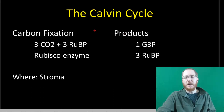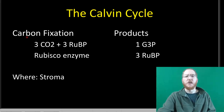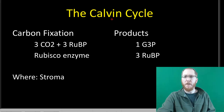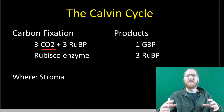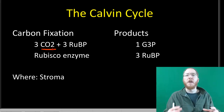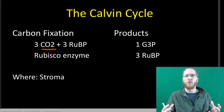So starting off, what do we need and what are we going to get? For us to do carbon fixation, which is really what the Calvin cycle is about — it's trying to take CO2 gas, carbon dioxide, and basically affix that to other molecules so it's now part of a bigger molecule. We call that carbon fixation.